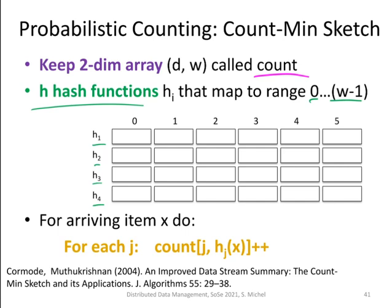Whenever there is a data item x arriving, for each of the hash functions, we go to the hash function corresponding row, for instance here, for h2, and look at the position where h2 is mapping x on, for instance here, and we are incrementing this value. Initially, all the values are 0, so we continue incrementing every time we come to one of these entries here.